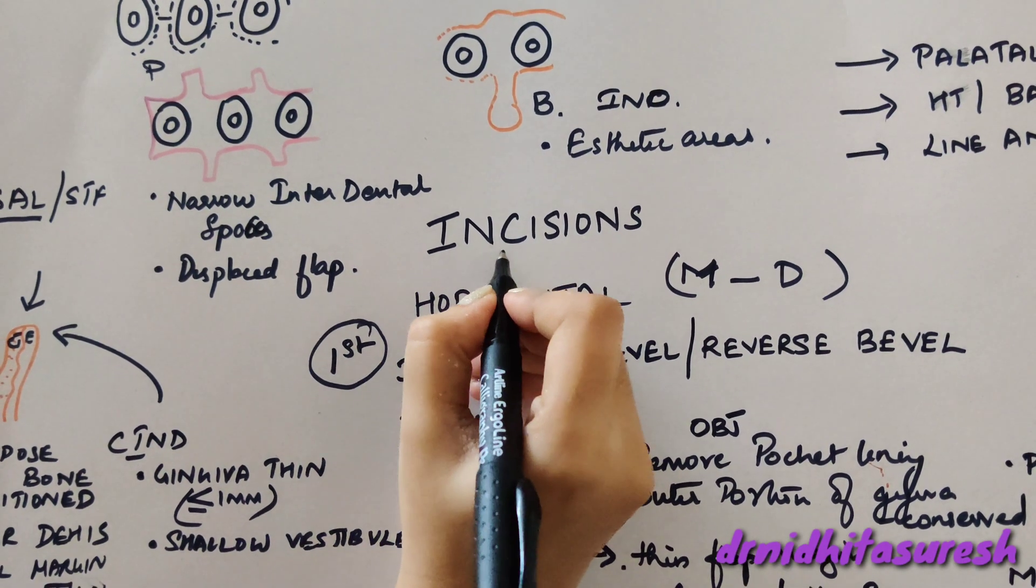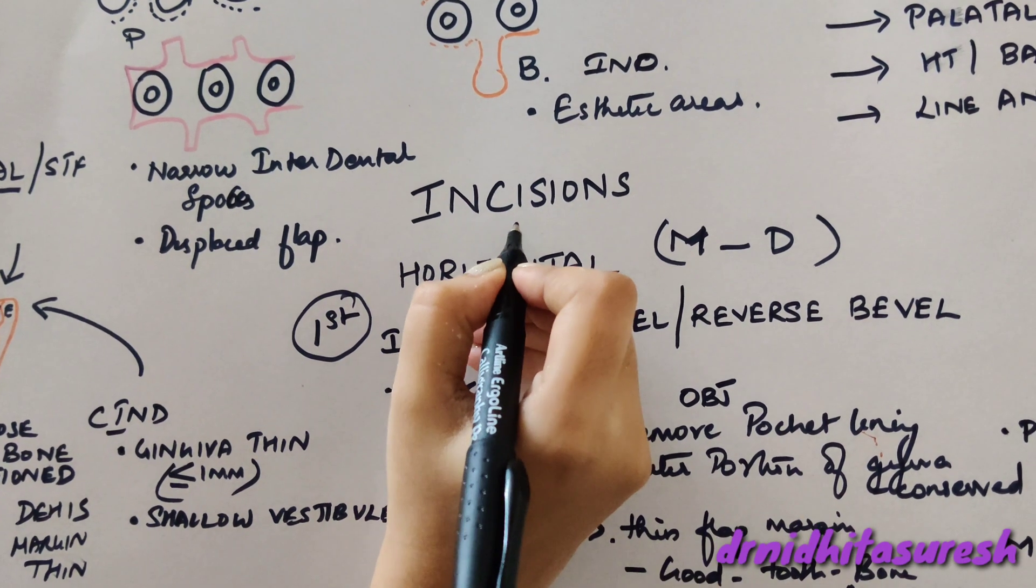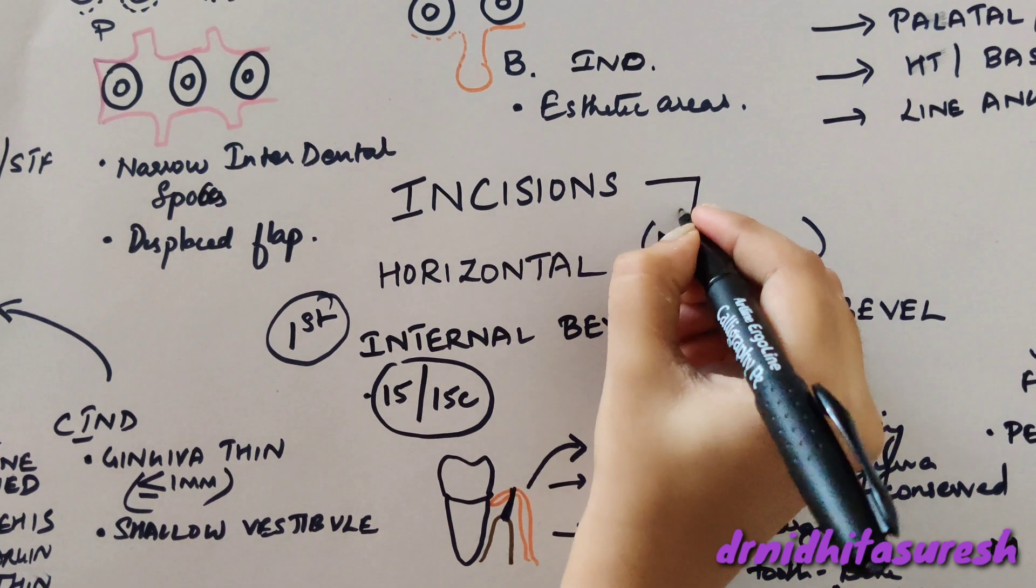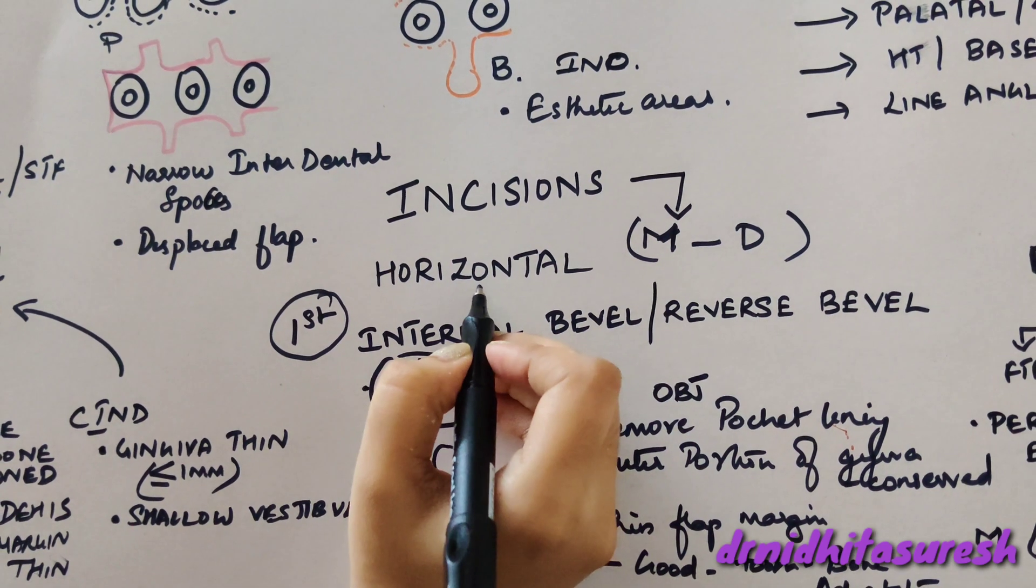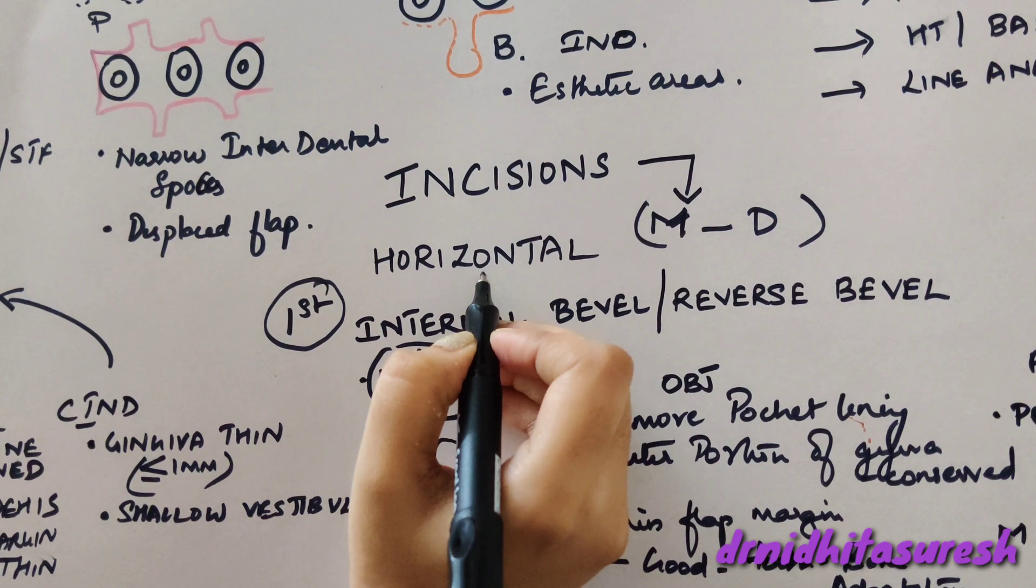Let's see the incisions used in periodontal flap. They can broadly be categorized into horizontal incisions and vertical incisions.